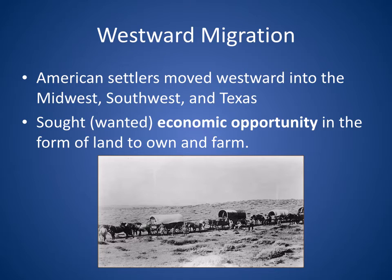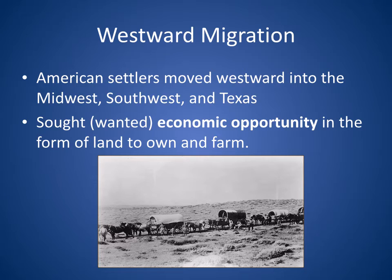We were moving west during this time. American settlers moved westward into the Midwest, Southwest, and Texas. They wanted economic opportunity in the form of land to own and farm, something that didn't exist on the East Coast. The creation of the cotton gin, the Reaper, and other farming techniques in the late 18th and early 19th century helped this westward migration because it made it easier to farm.